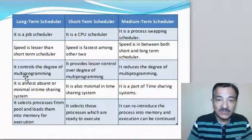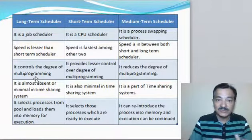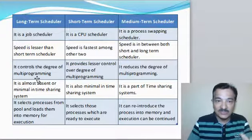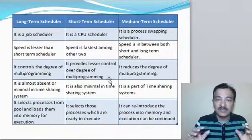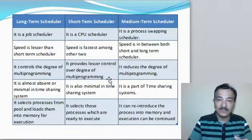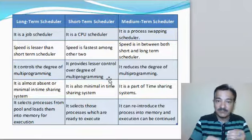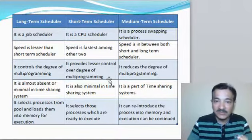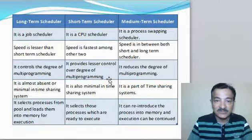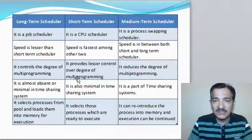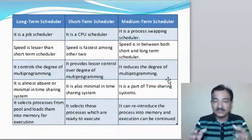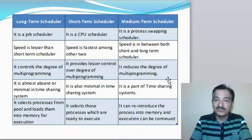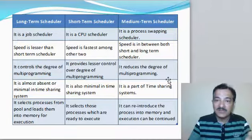The long term scheduler controls the degree of multiprogramming — ensuring how many processes should actually go for execution. The short term scheduler provides less control over the degree of multiprogramming; it simply schedules whichever process is next to be given to the CPU based on different parameters. The medium term scheduler reduces the degree of multiprogramming by swapping processes that are not executing into secondary memory.